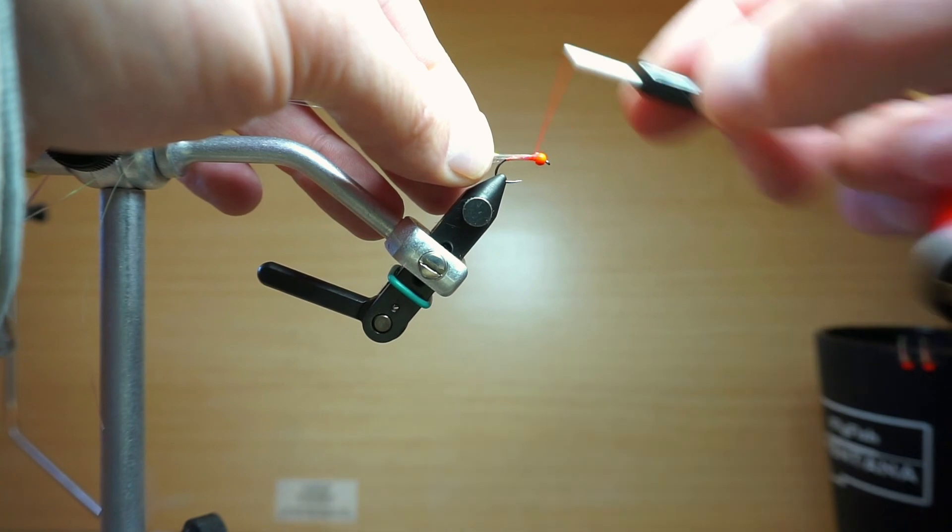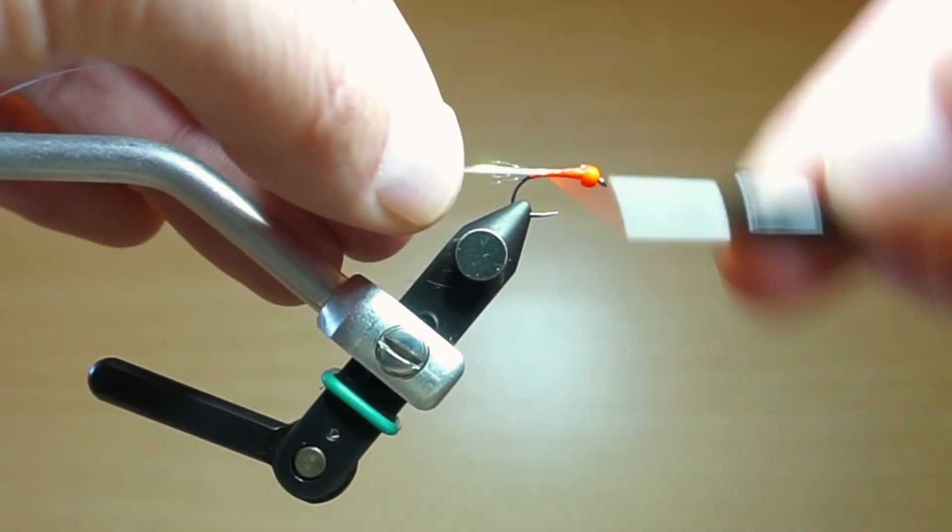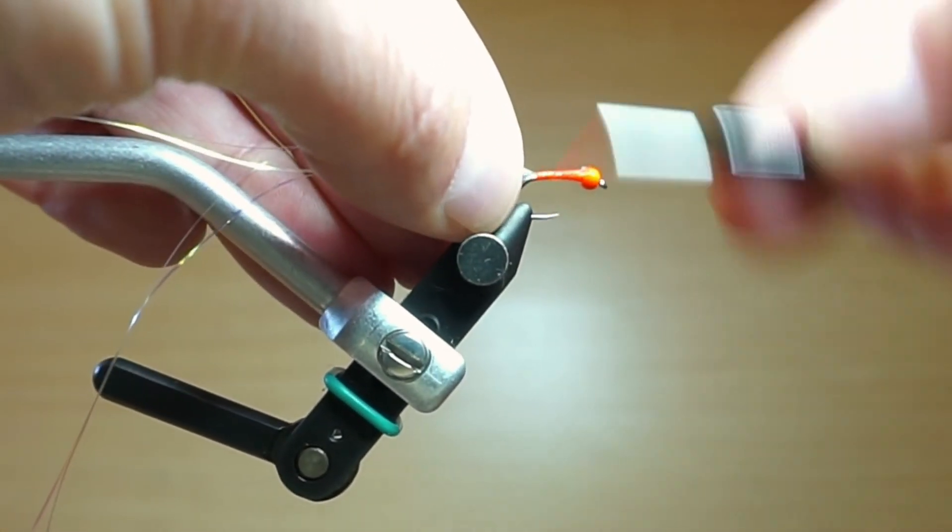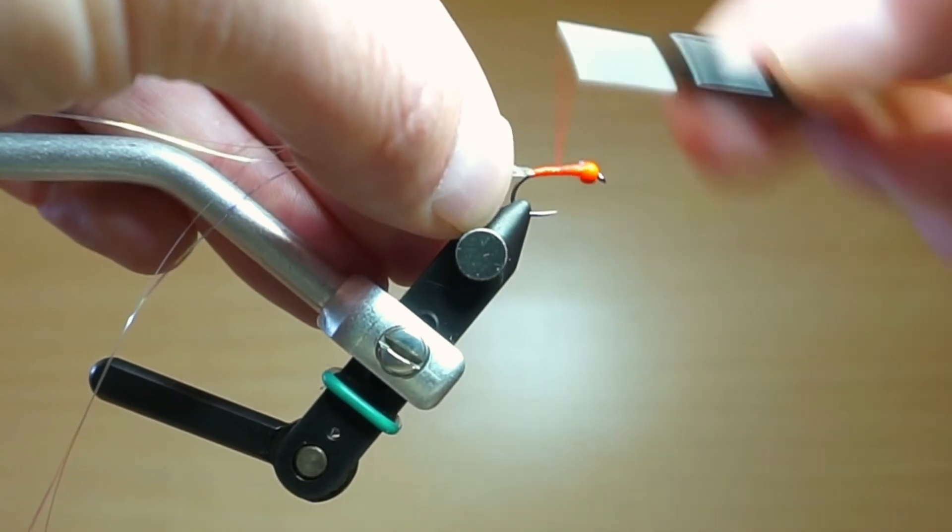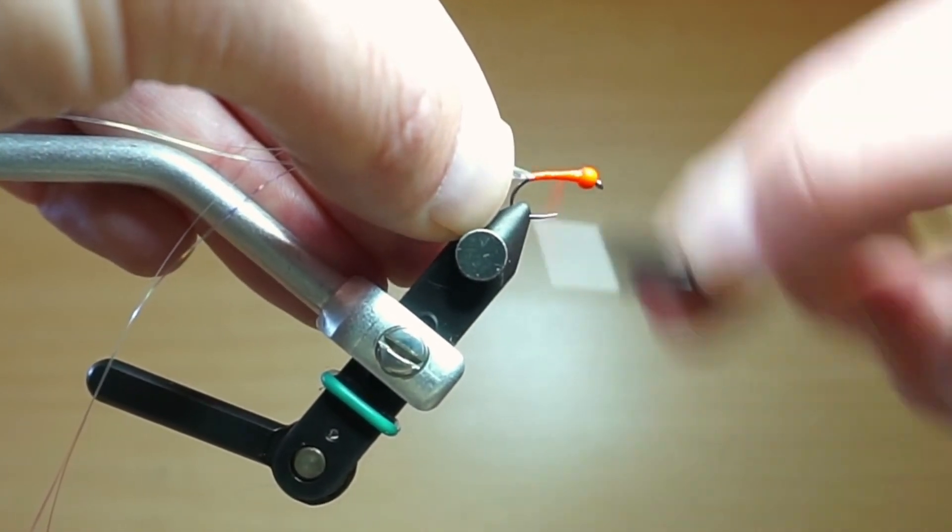So I'm going to go ahead and attach that. I always start it on the side towards me so that as I wrap it kind of ends up on top of the hook the way I want it. And I'm going to wrap it all the way down to the bend of the hook again and then all the way back up, creating a little taper there as I go.